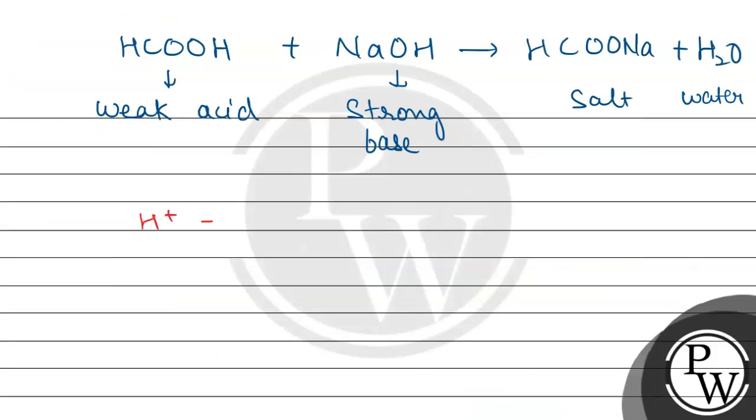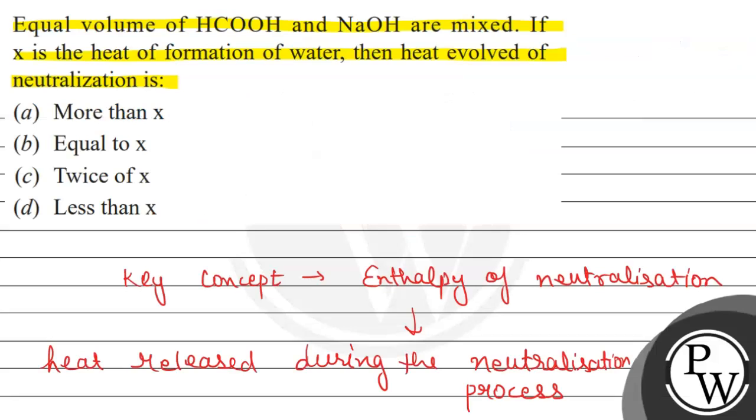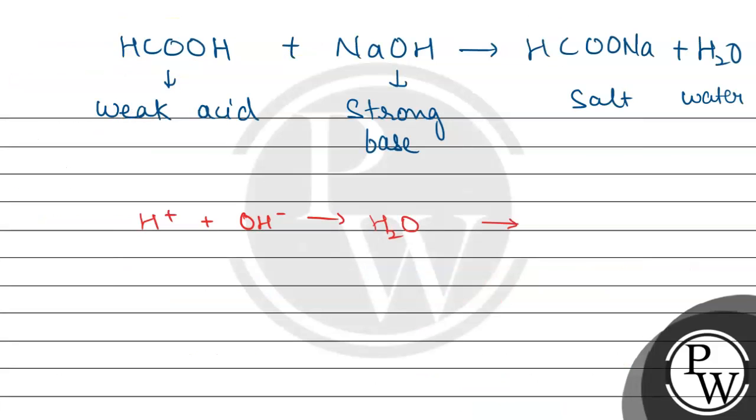So when H positive and OH negative ions combine, then it will lead to the formation of one mole of water. During this process heat released will be the heat of formation of the water, and that is given to us as X.